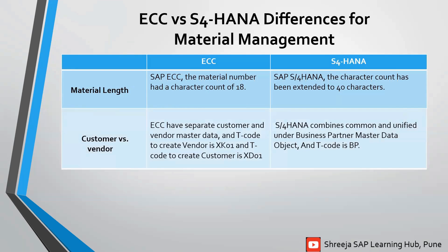Next one: customer versus vendor. In ECC, there are separate customer and vendor master data. The T-code for the creation of a vendor is XK01 and for the customer it is XD01. Whereas in S4HANA, it combines them under a unified business partner master data object, and the T-code for creation is BP.